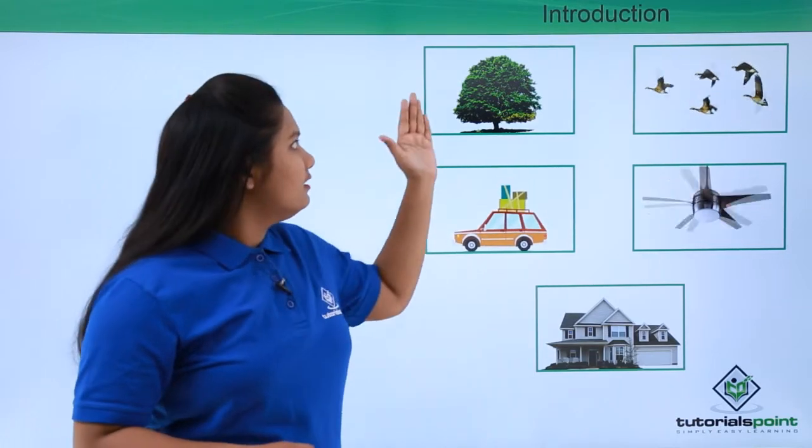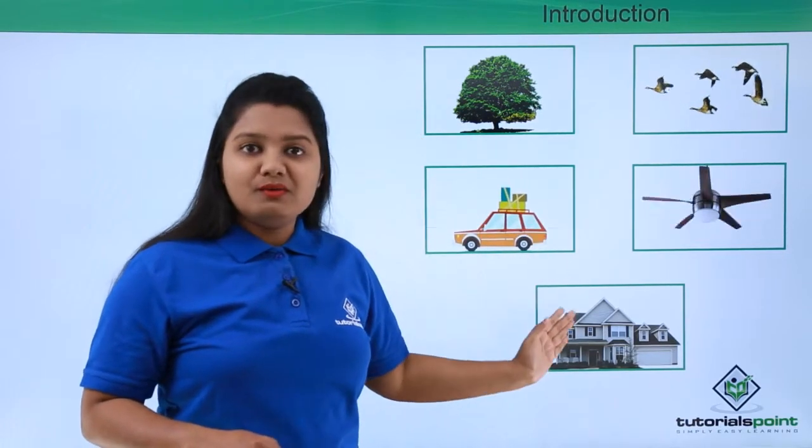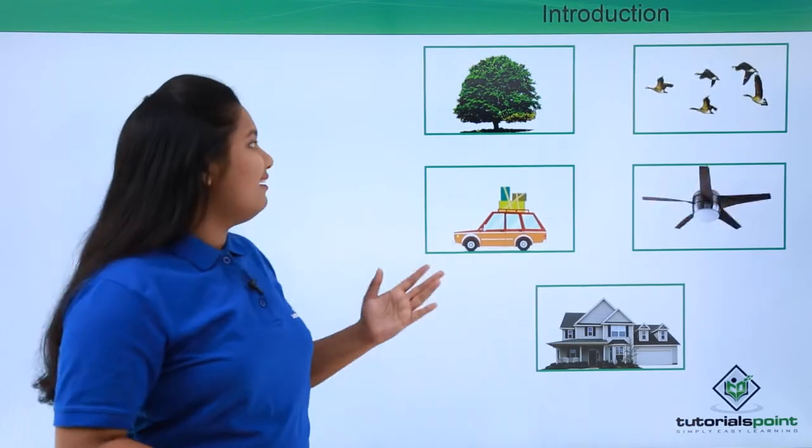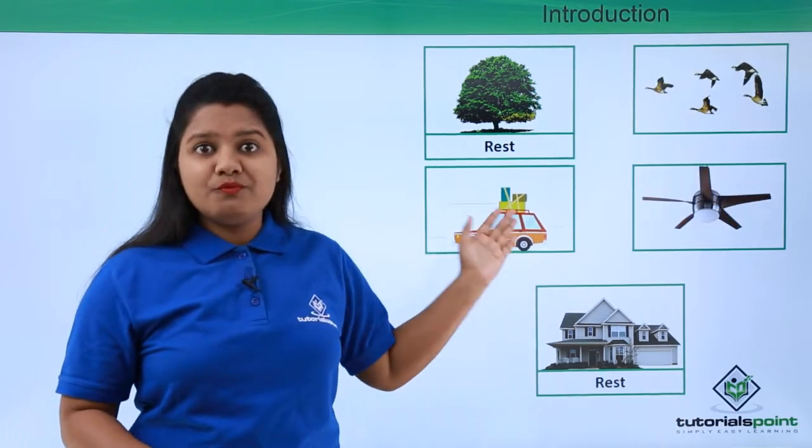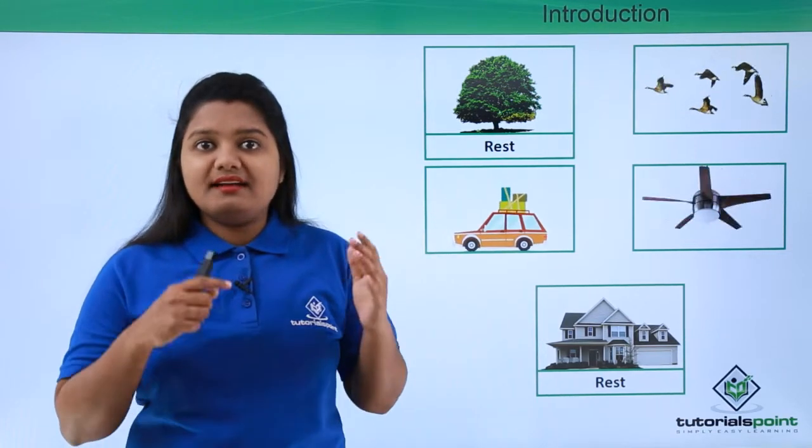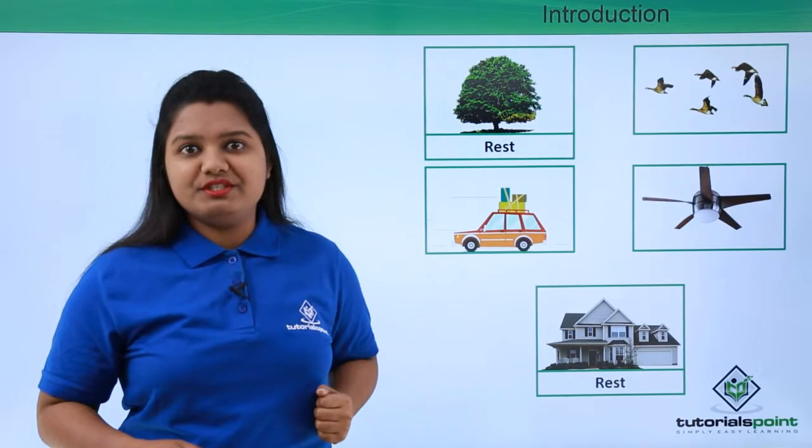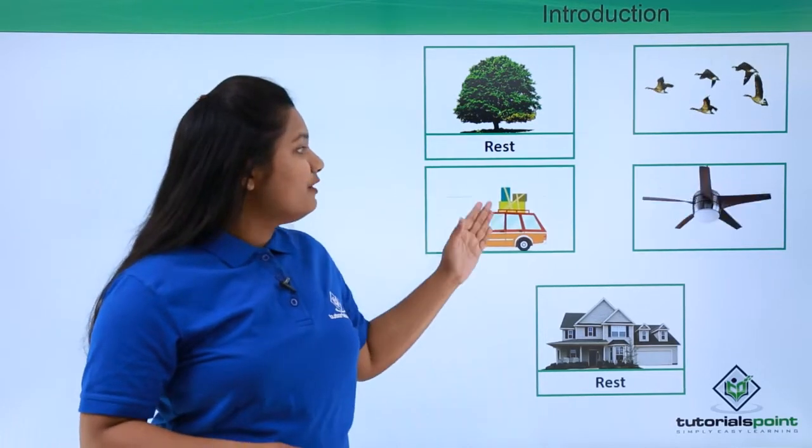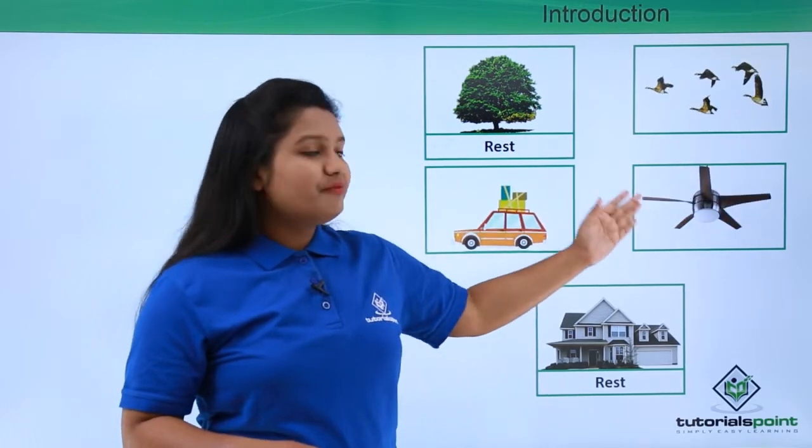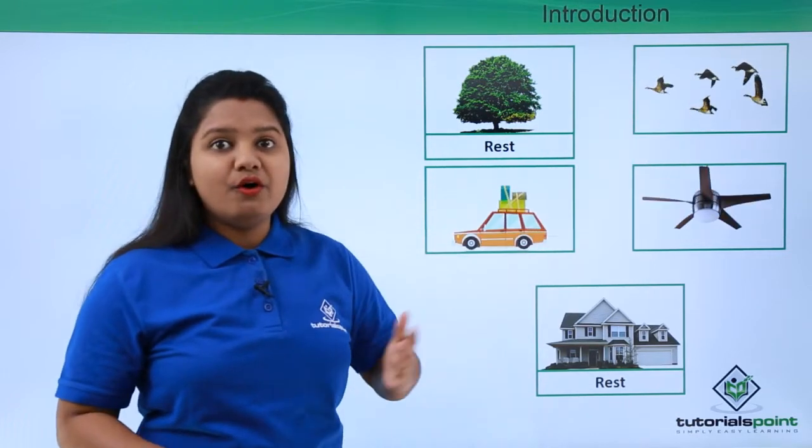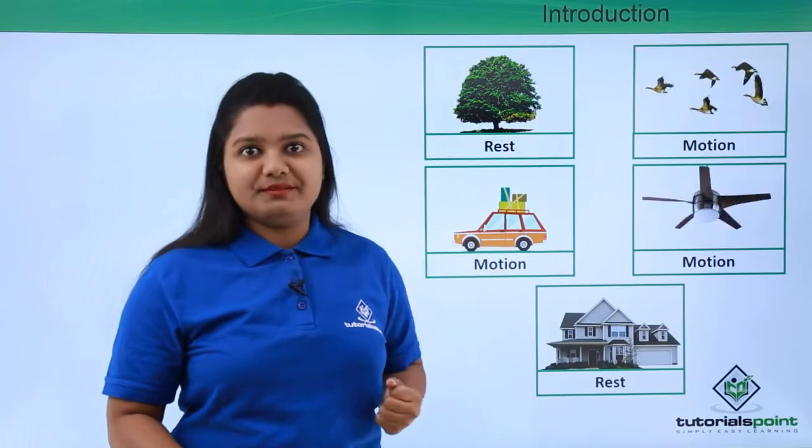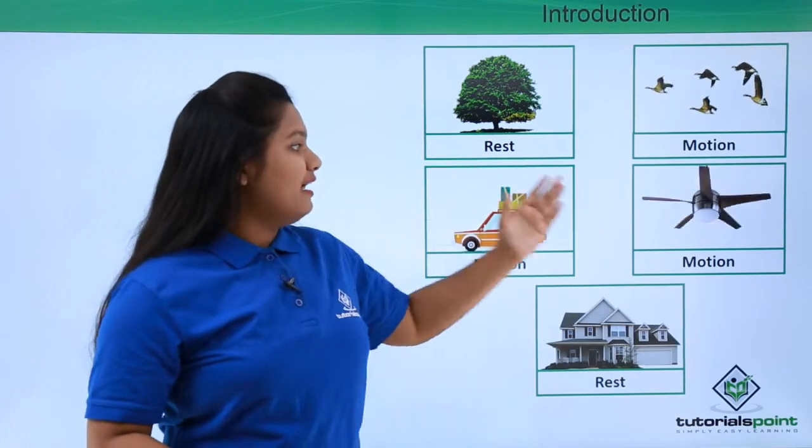So here the trees and the houses on a street are at rest. Now the other objects which seem to move from one place to another are said to be in motion. So here a moving car on the road, the blades of a ceiling fan, and the flying birds are all in the state of motion.